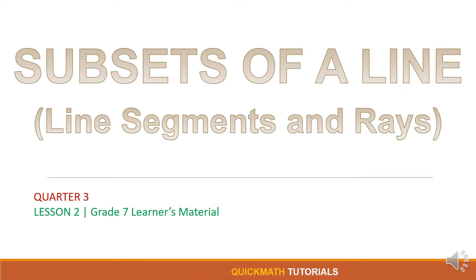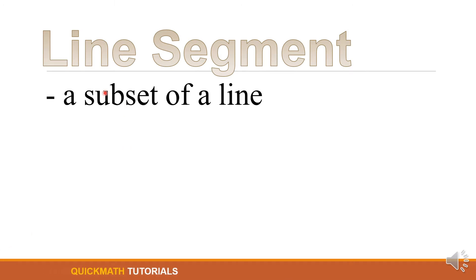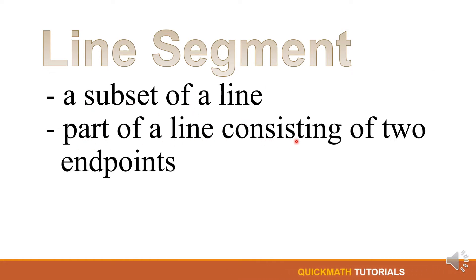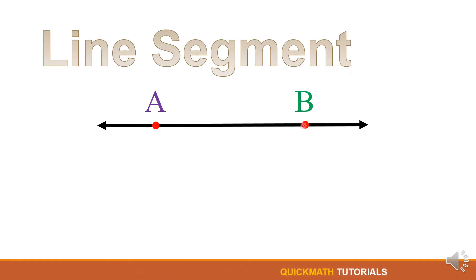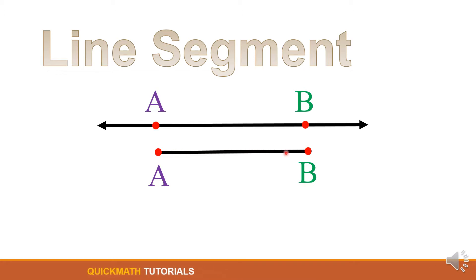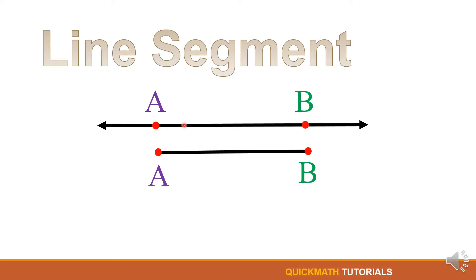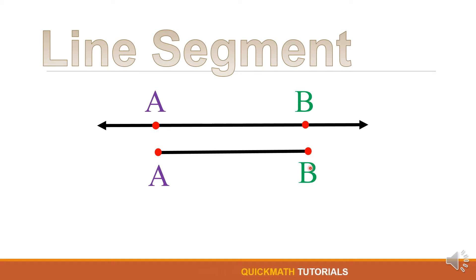The subsets of a line are line segments and rays. Let's first define what a line segment is. A line segment is a subset of a line — it is a part of a line consisting of two endpoints. For example, we have a line with two points, point A and point B. If we cut this line from A to B, it gives us a line segment with endpoint A and endpoint B. A line has no end — it extends in opposite directions — however, a line segment has an end: it ends at A and it ends at B.